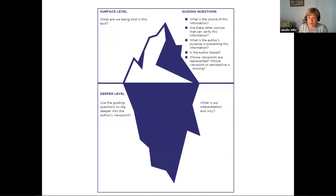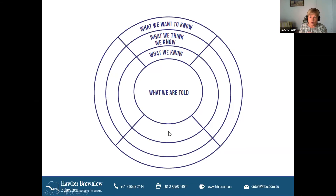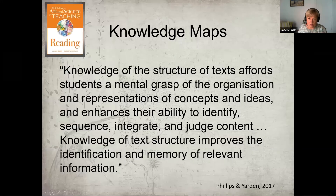There are some guiding questions for digging deeper into the author's viewpoint: What's the source of this information? Is it reliable? Are there other sources that can verify this? What's the author's purpose? Is the author biased? Whose viewpoints are represented — and most importantly, whose viewpoint or perspective is missing? This is very much into critical literacy. Another related strategy — 'This is what we're told,' 'This is what we already know,' 'This is what we think we know,' and 'This is what we think we need to find out' — a more structured version of that approach.